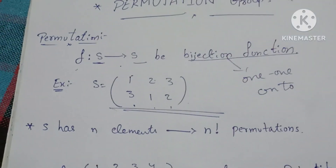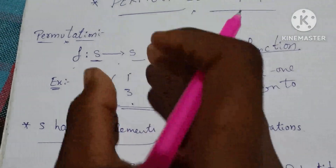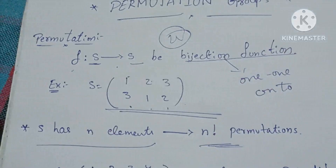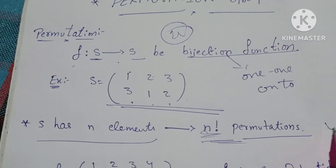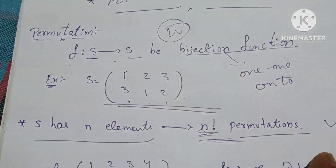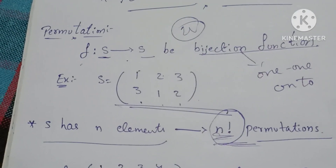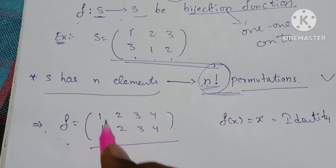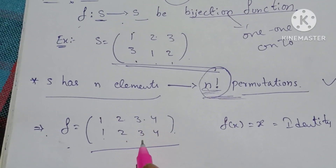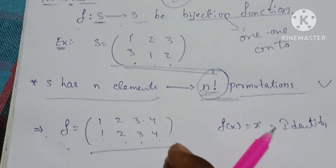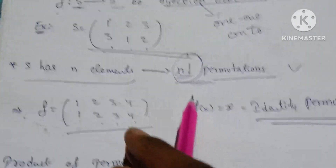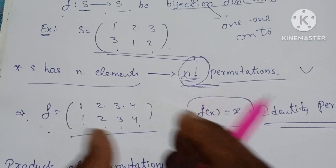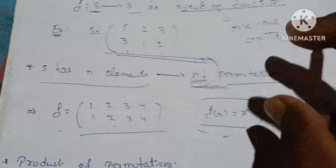We have n elements. Identity Permutations: F of x is equal to x. For the same elements, this condition defines the Identity Permutation.